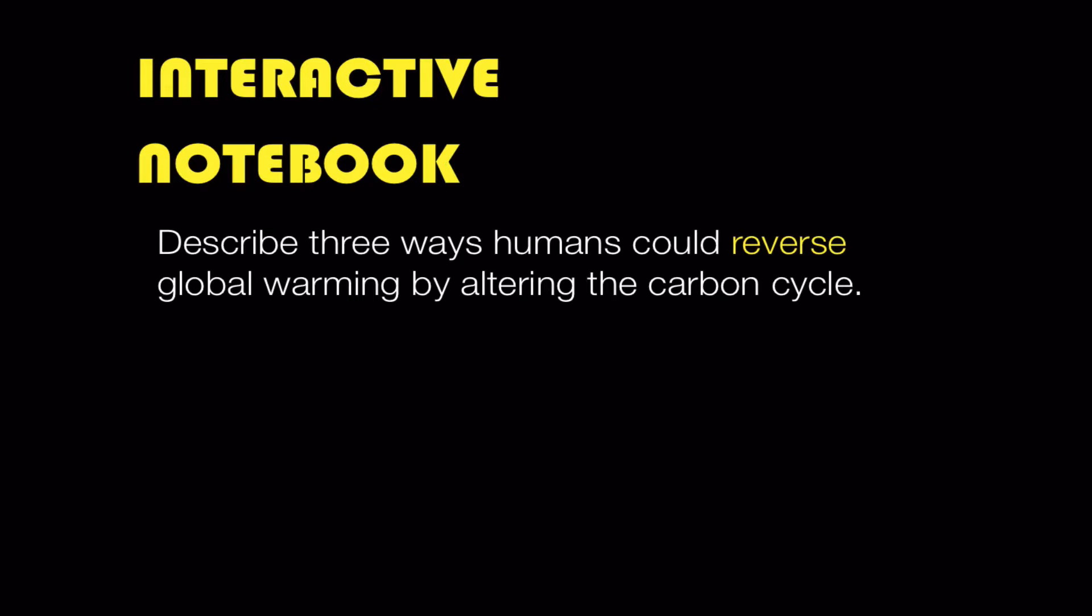Now in your notebooks, if you can explain three ways that humans could reverse global warming by messing with the carbon cycle in some positive way rather than the negative ways you've probably heard about, how could the action of humans reverse global warming by changing the carbon cycle? Think about that, write something down. If you can do that, then you understand the carbon cycle.